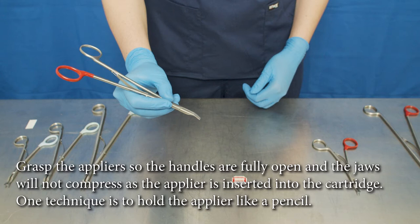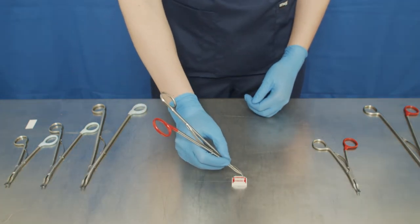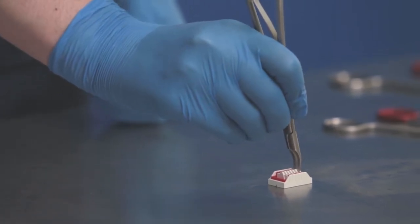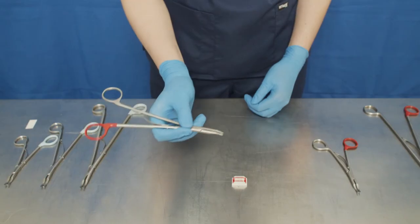Vertically and laterally align the applier jaws over a WEC clip in the cartridge, then push the applier firmly onto the clip without compressing the handles. Minimal force is required.